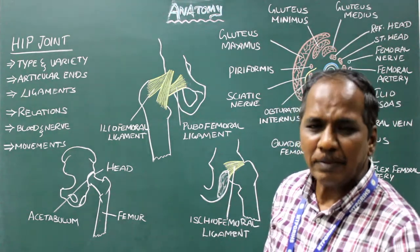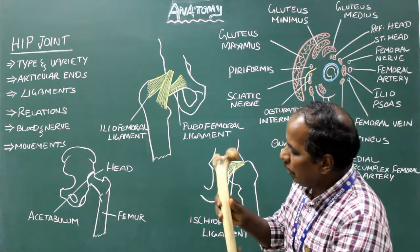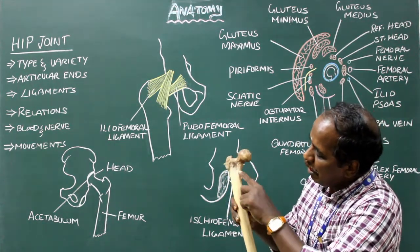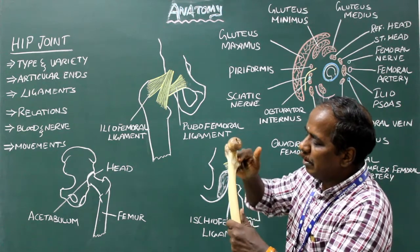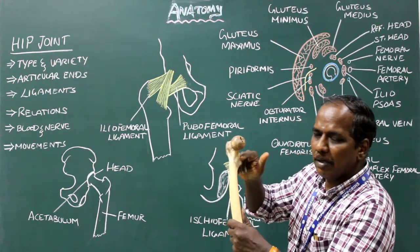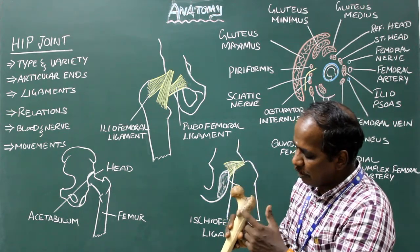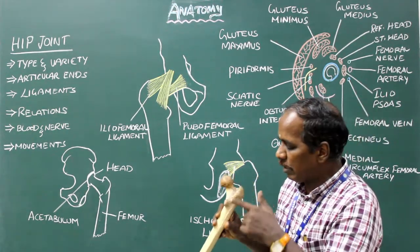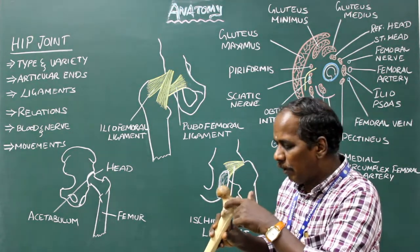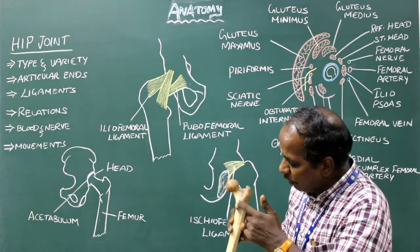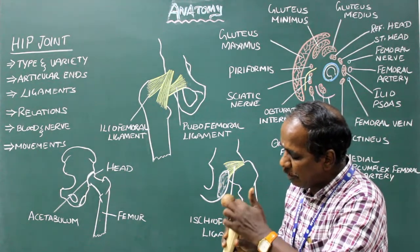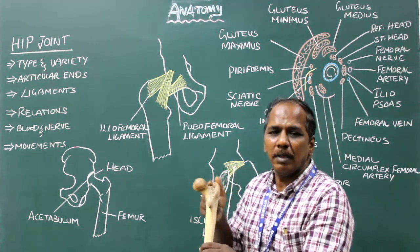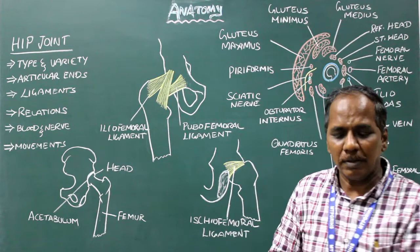Distally, the capsule is attached anteriorly to the intertrochanteric line, inferiorly to the base of the lesser trochanter. Posteriorly, it is attached to the posterior surface of the neck of femur, 1 cm proximal to the intertrochanteric crest. Superiorly, it is attached to the base of the greater trochanter.